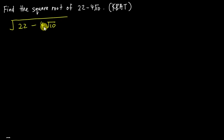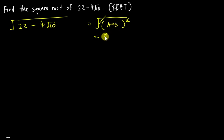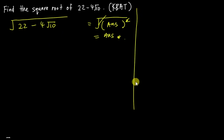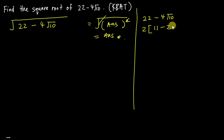The first idea that comes to mind: is it possible to get something like the square root of some bracket squared, so we can cancel it out and get the answer? The second problem is how to factorize 22 - 4√10 — it's not like the simple quadratic things we always do. Try and error is a lot faster here. So I factorize out a 2, giving 2(11 - 2√10).